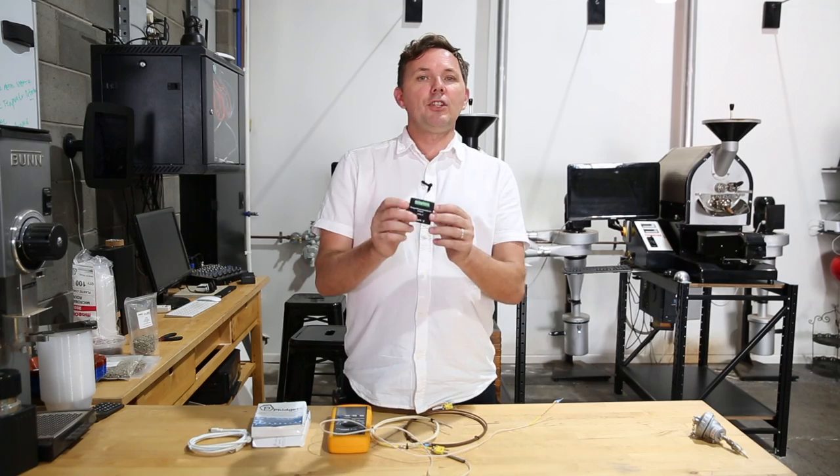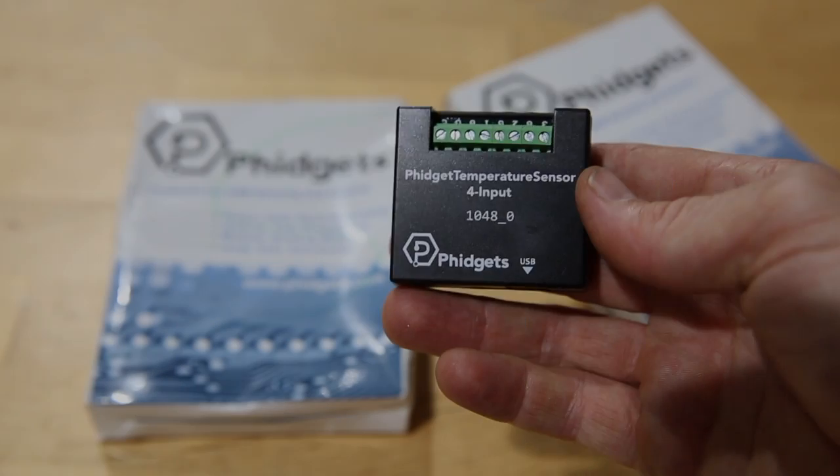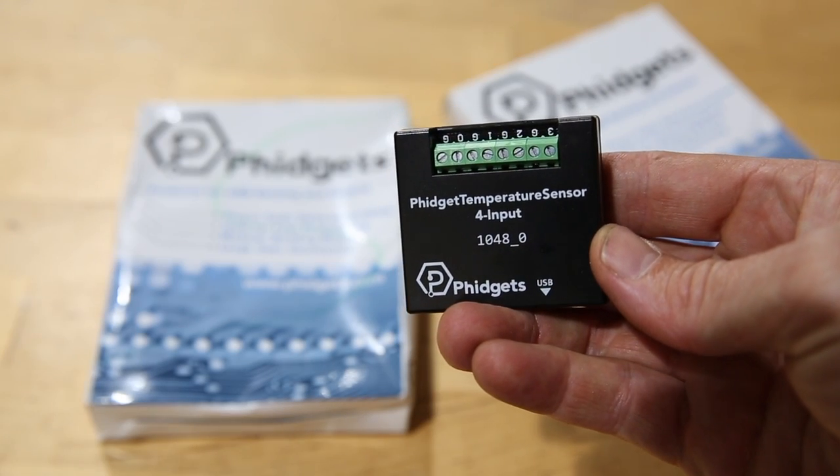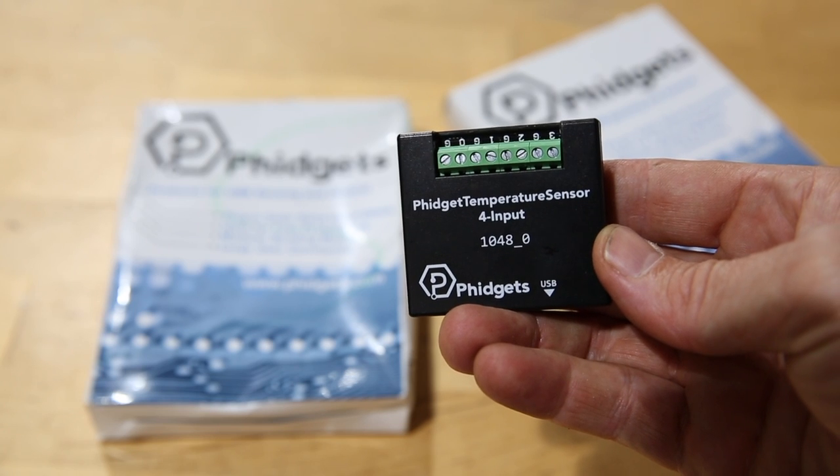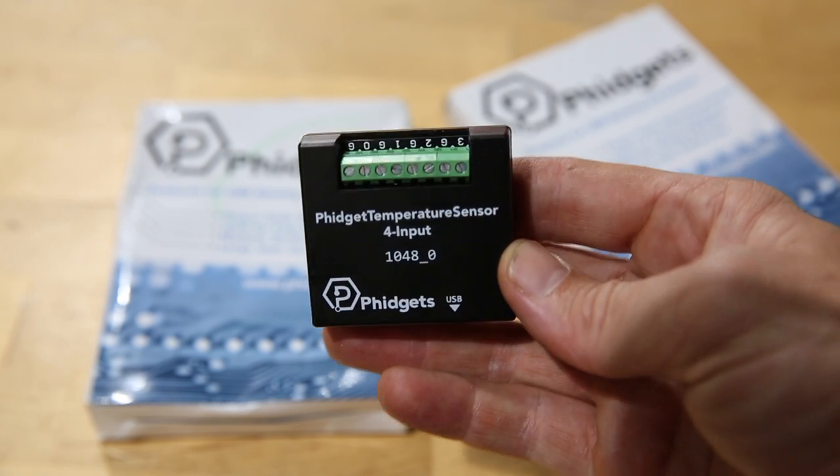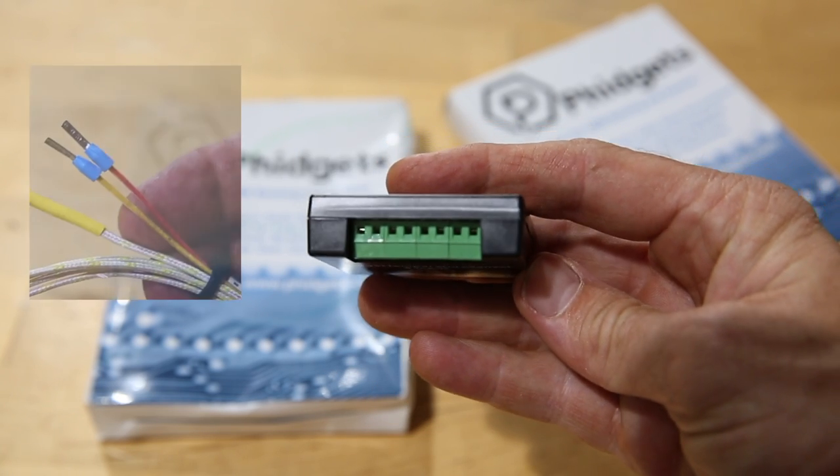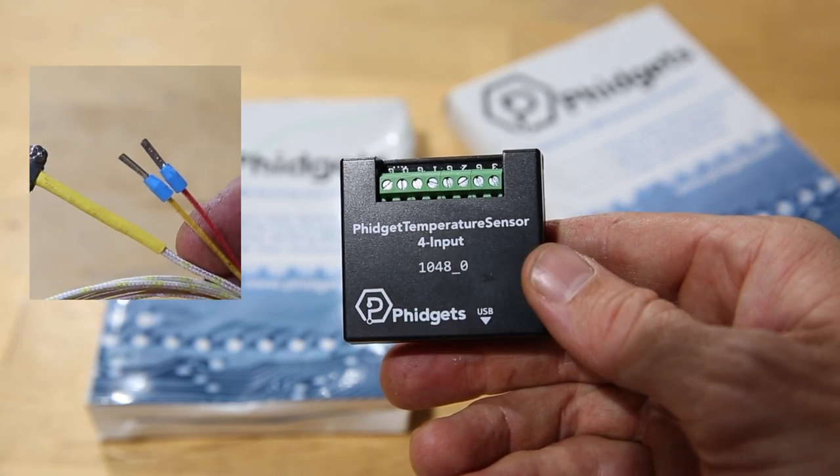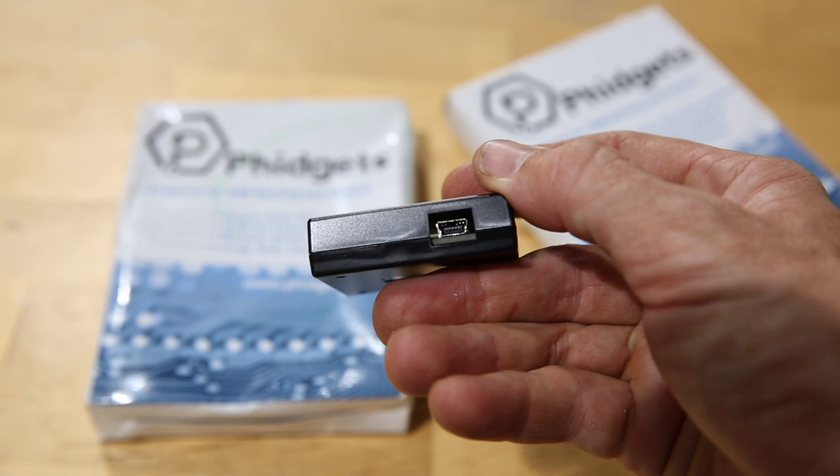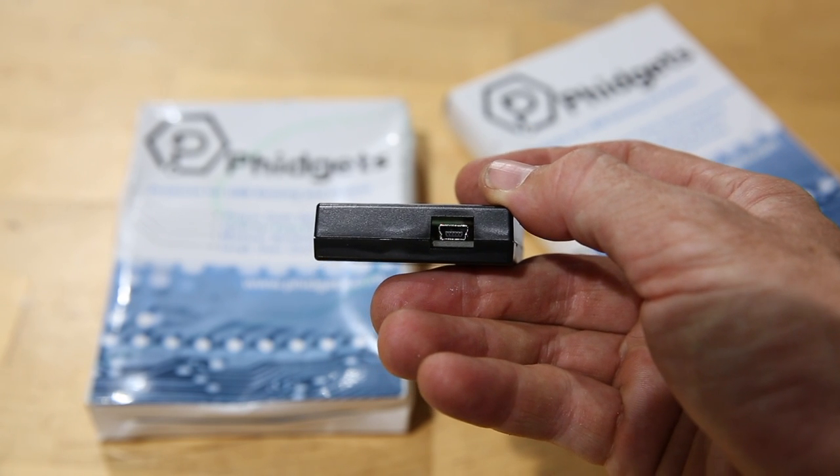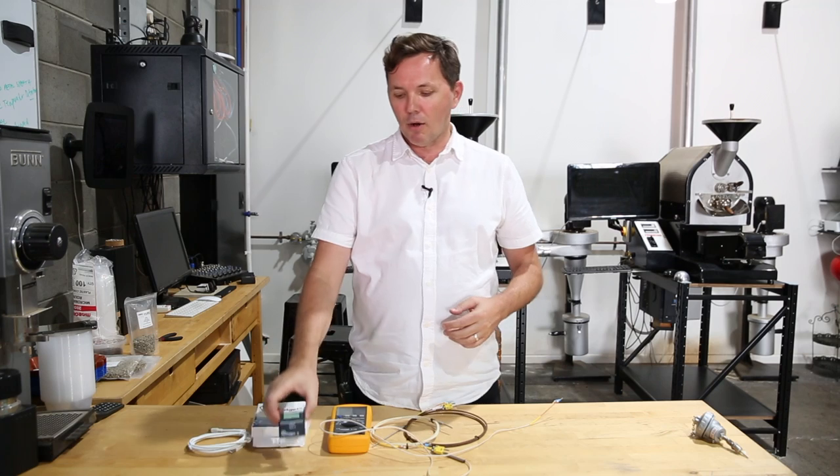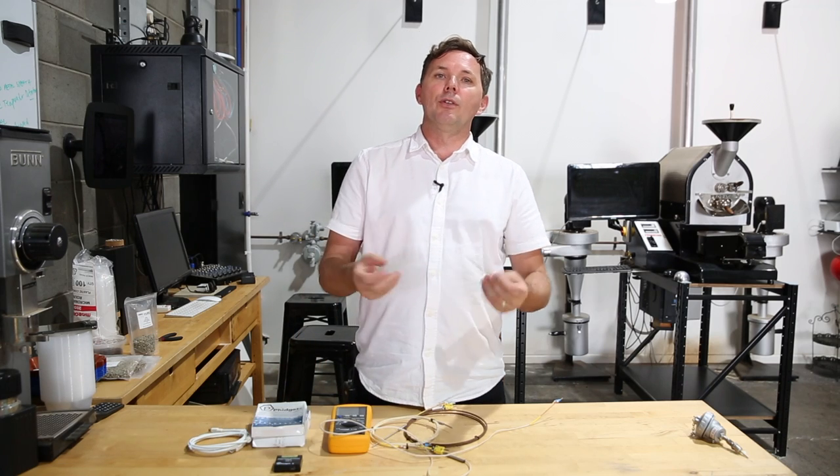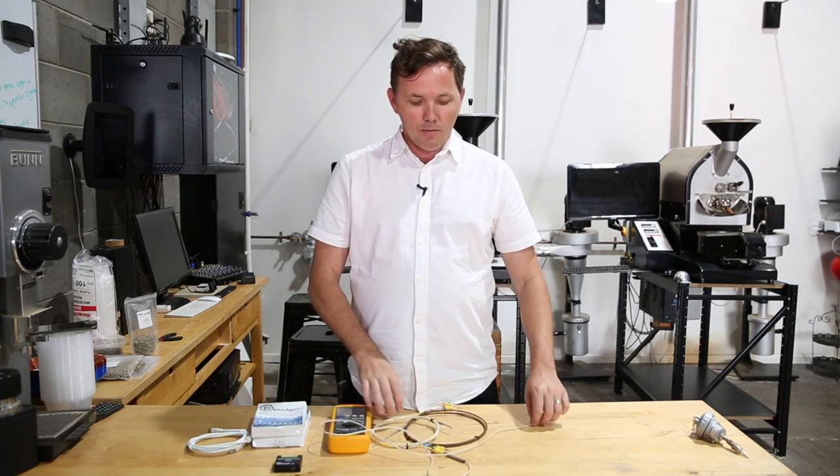We have one here which is a Phidget, which comes out of Canada, I believe. This is a four input Phidget, and this is really the communication device that takes the electrical measurement and converts it through a USB cable into either Kelvin, Celsius or Fahrenheit. So this is our little communication box that brings that data into a user-friendly way.